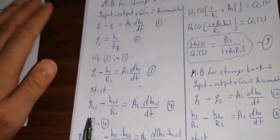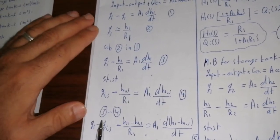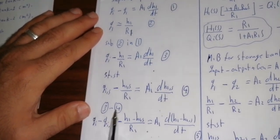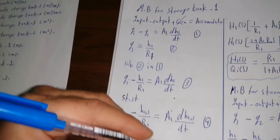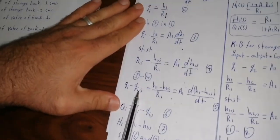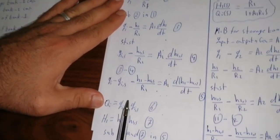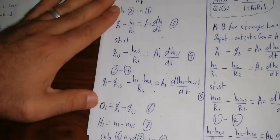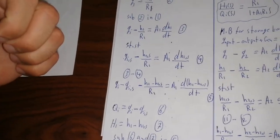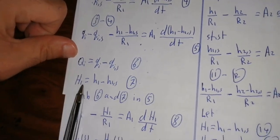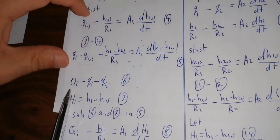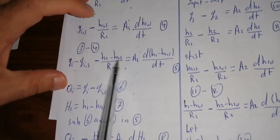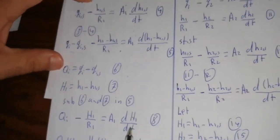To know the exact dynamic behavior of the system, we subtract the steady-state equation from the dynamic equation (Equation 3 minus Equation 4). This gives: (QI - QIS) - (H1 - H1S)/R1 = A1·d(H1 - H1S)/dt (Equation 5). We then introduce deviation variables: QI_cap = QI - QIS and H1_cap = H1 - H1S (Equations 6 and 7). Substituting these into Equation 5 simplifies to: QI_cap - H1_cap/R1 = A1·dH1_cap/dt (Equation 8).